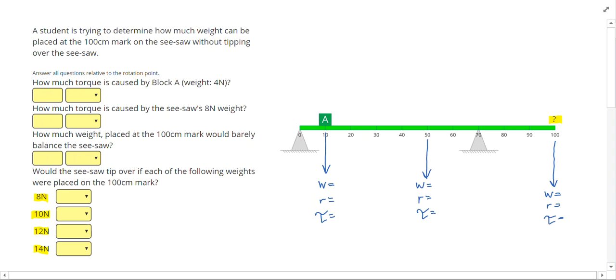This problem says to answer all questions relative to the rotation point. I know that if this seesaw starts to tip over, it would end up looking something like this. If I put too much weight where that question mark is, that means this is my rotation point right here, right on the right fulcrum.